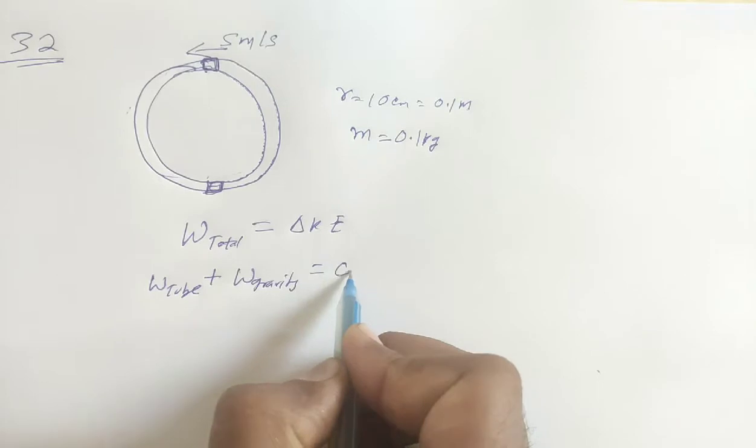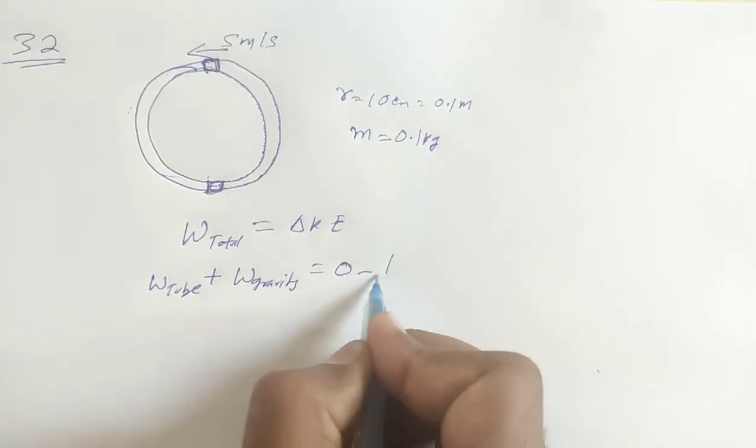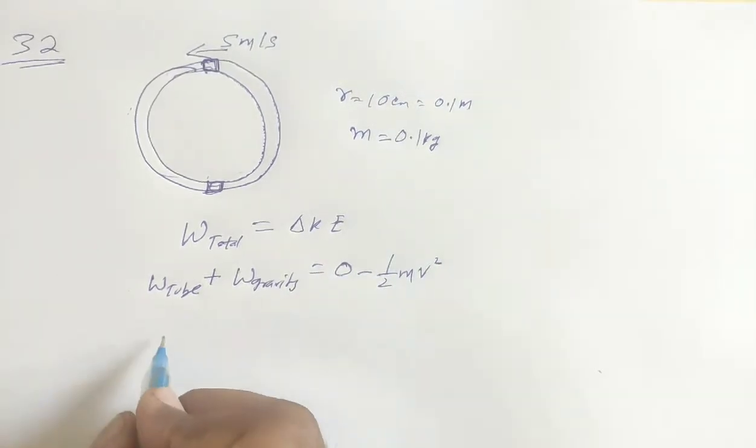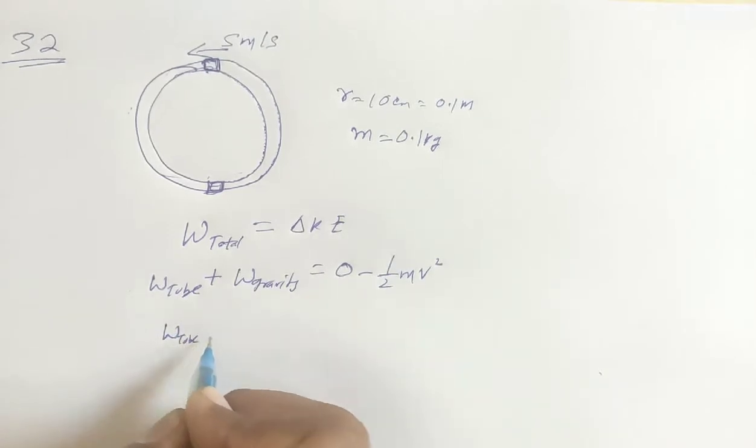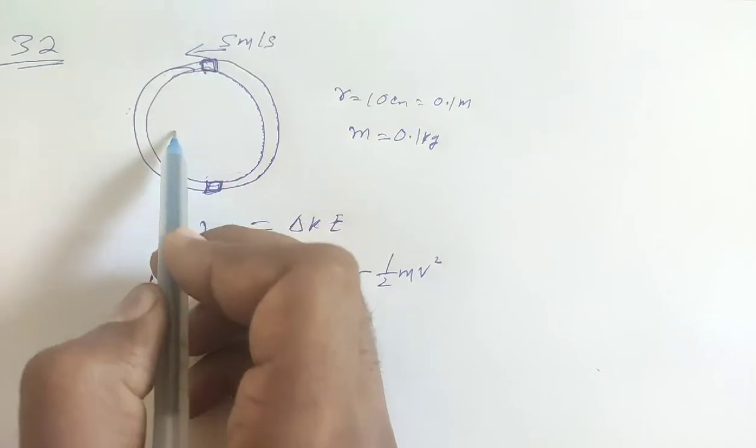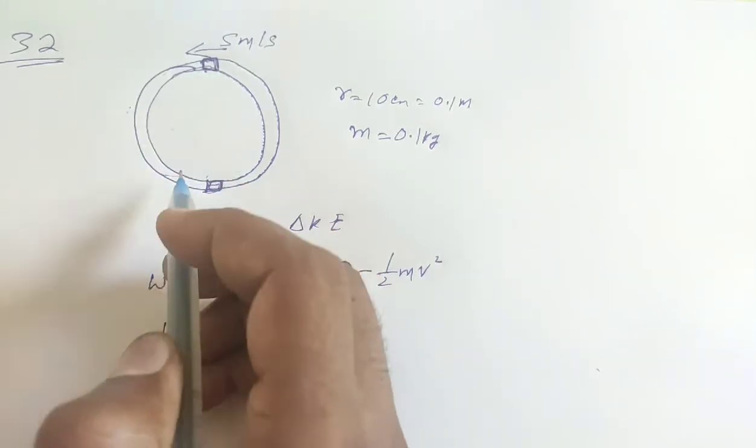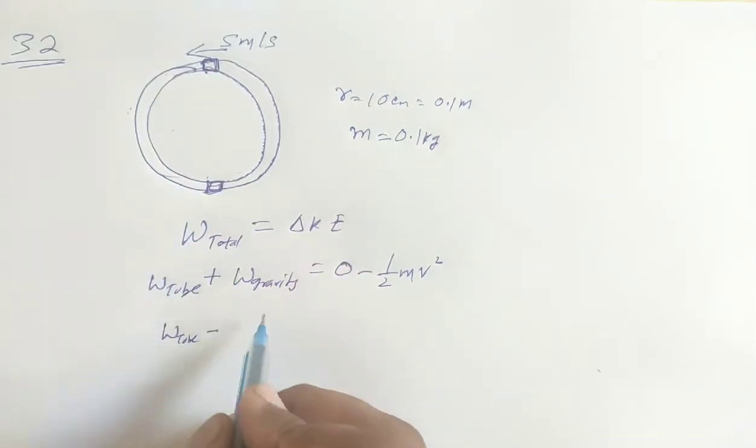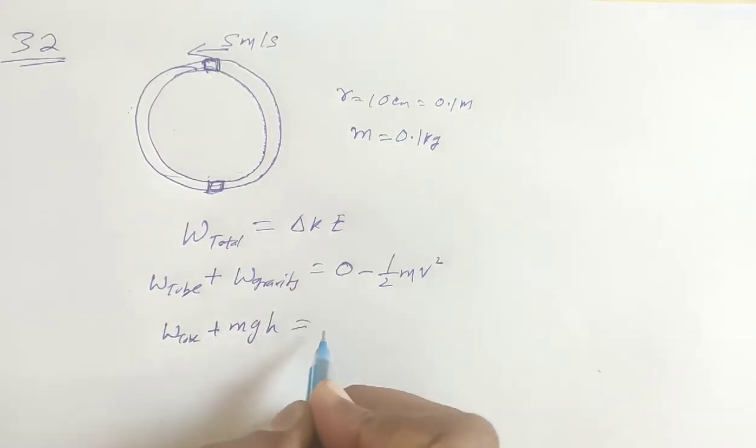Final kinetic energy is equal to zero because the block is at rest.